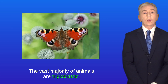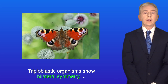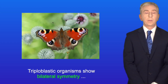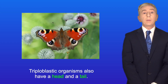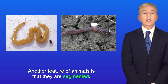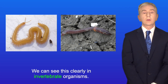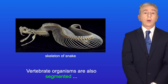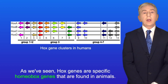The vast majority of animals are triploblastic — they form three primary tissue layers. Triploblastic organisms show bilateral symmetry; they have a left and right side, as well as a head and a tail. Another feature of animals is that they are segmented. We can see this clearly in invertebrate organisms. Vertebrate organisms are also segmented, for example in the vertebrae of their backbone.